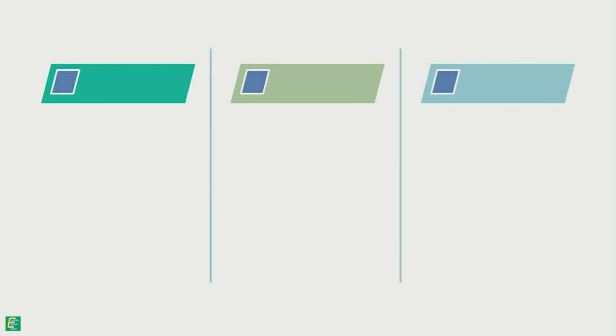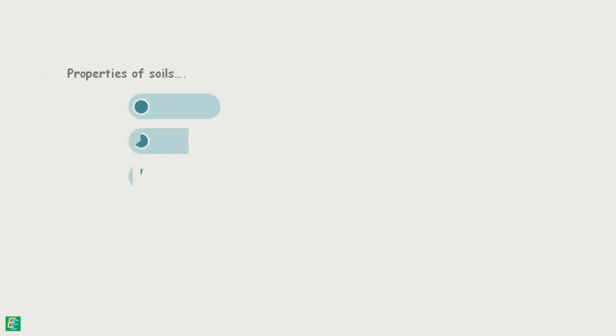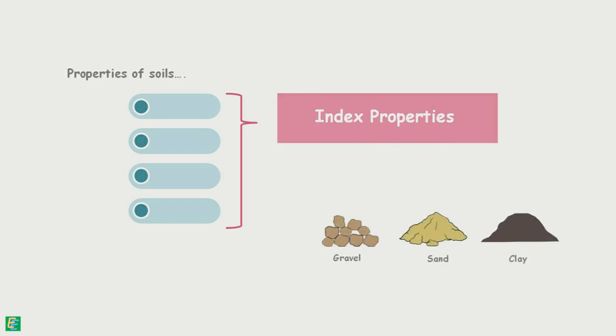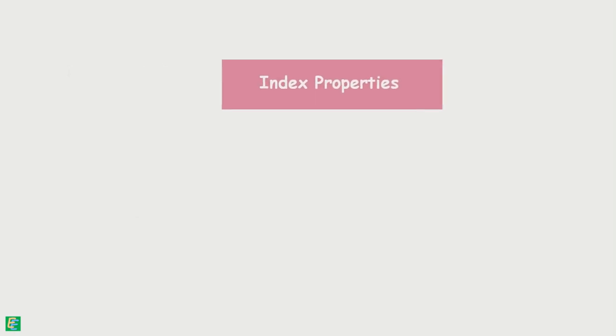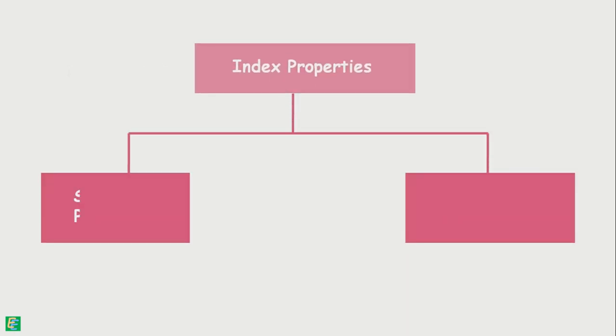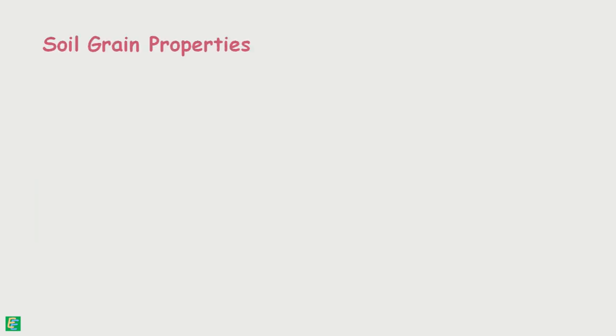Index properties can be divided into two categories: soil grain properties and soil aggregate properties. Soil grain properties, as the name suggests, depend upon individual grains of soil.